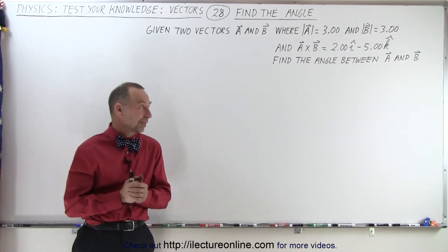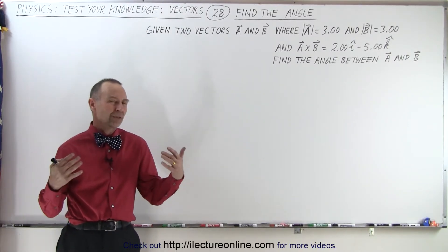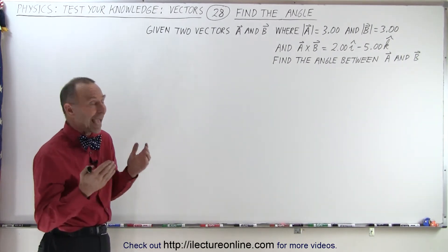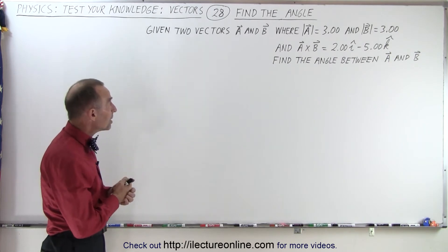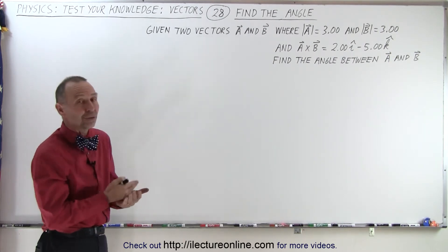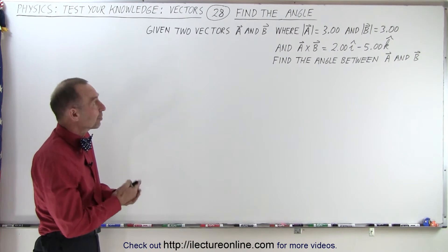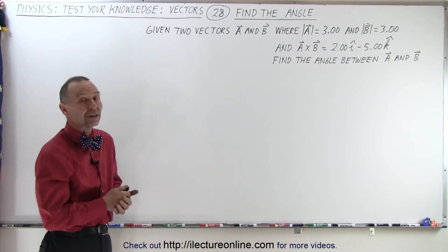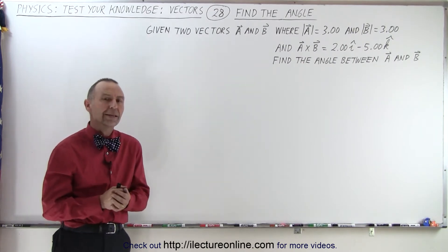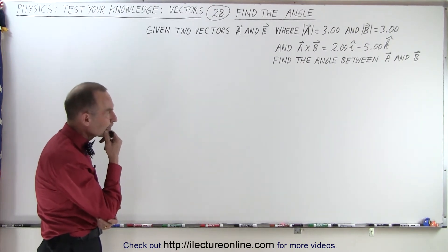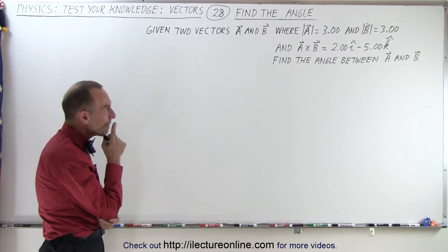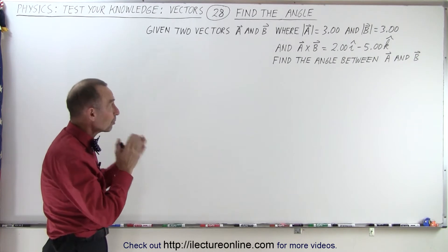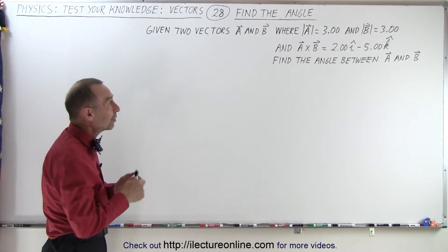Welcome to our lecture online. It's always amazing how many different ways we can pose a problem using vectors. In this case we're wanting to find the angle between two vectors a and b, and we're given that the magnitude of a is 3, the magnitude of b is 3, and that the cross product of a and b is 2i minus 5k. So how do we find the angle between a and b? Since they've given us the magnitudes of a and b but not the vectors themselves, and we know the cross product is equal to 2i minus 5k.